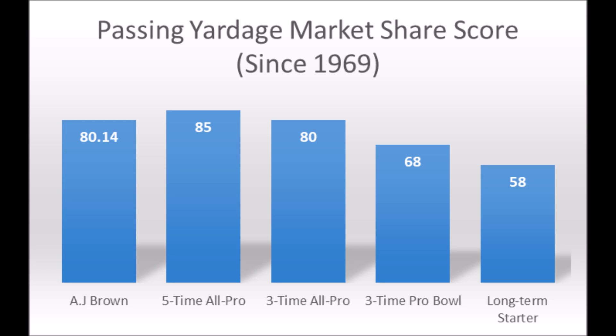His production score is 80.14 out of 100, which pretty much hits the three-time all-pro potential range. It doesn't quite hit the five-time all-pro range, but that could change after the season. If he goes in and has a major breakout year and just says 'I'm the man,' which is what you want prospects to do — that's the ideal scenario.